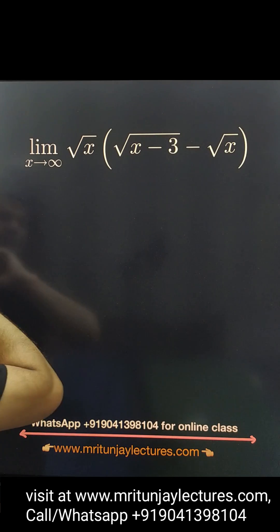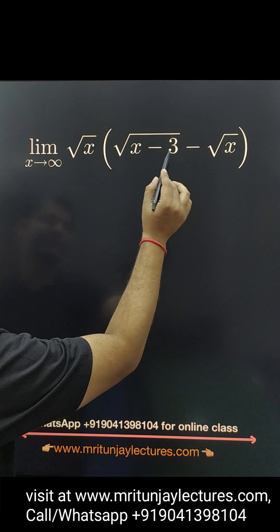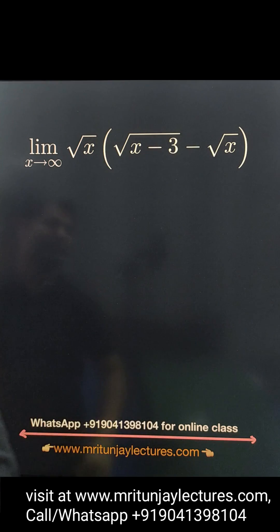Now question of the day: limit as x tends to infinity, under root x times under root x minus 3 minus root x. So first of all, how can we solve this type of problem?